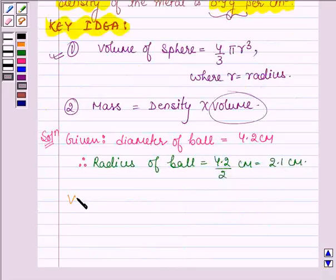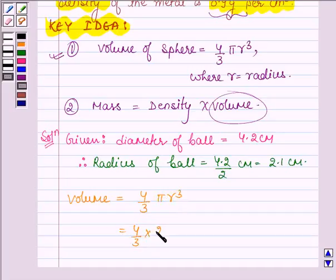Now let us find the volume to find the mass of the ball. So volume is given by 4/3 π r³. So we have 4/3 into 22/7 into r is 2.1 into 2.1 into 2.1 cm³.